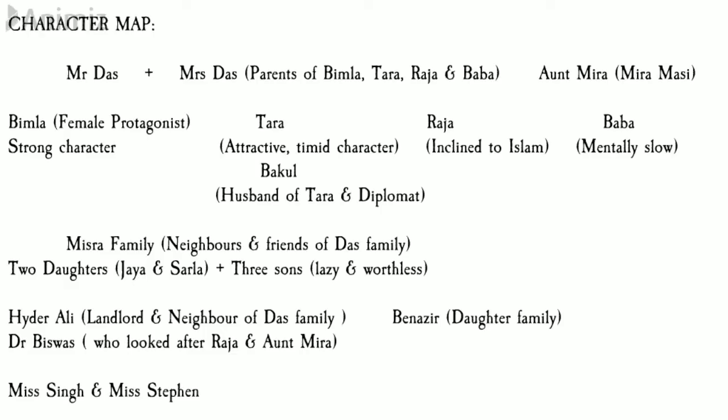The next character is very important: Hyder Ali. Since this novel revolves around communal tensions between Hindus and Muslims post-partition, Hyder Ali is significant. He is the landlord of multiple houses in Delhi including the Das house — a rich, charismatic man who lives next to the Das family in a huge mansion. Due to communal clashes, Hyder Ali's entire family eventually has to leave Delhi and go to Hyderabad. Benazir was his only daughter, who eventually married Raja. Miss Singh was a young and vibrant teacher with whom Tara connected, and Miss Stefan was the elderly principal. These last three characters have nominal contribution to the novel.